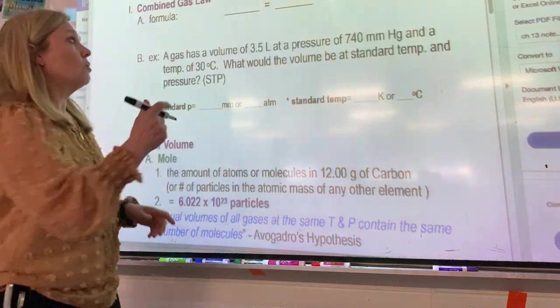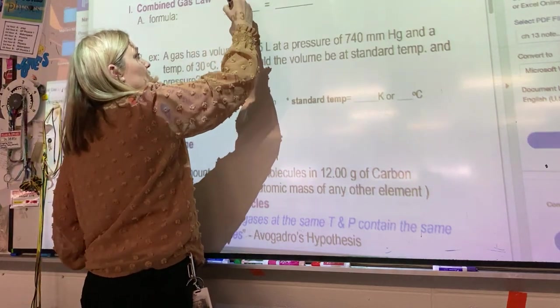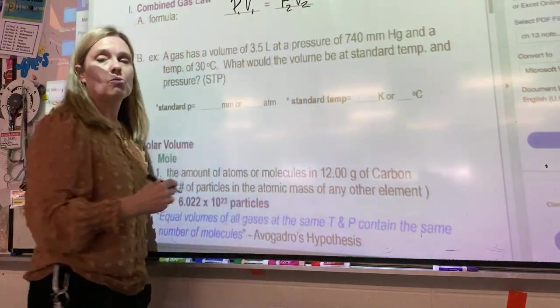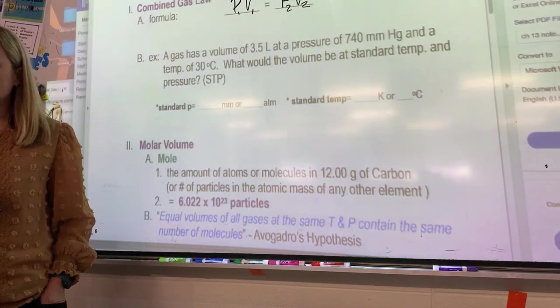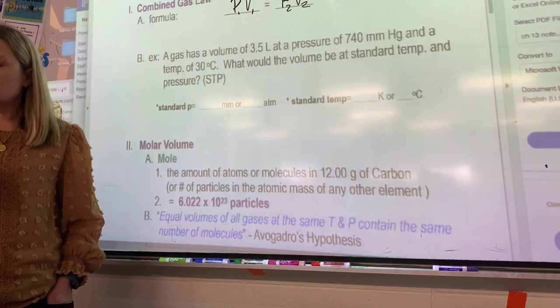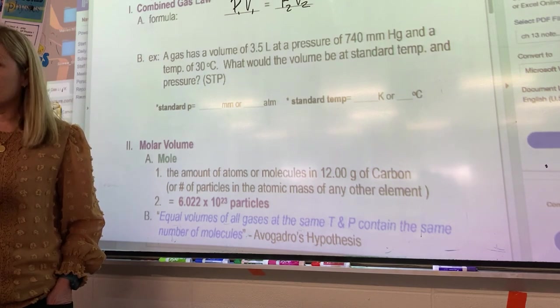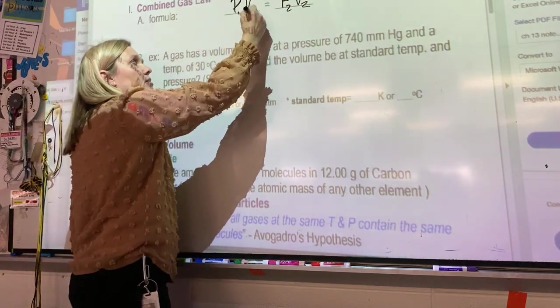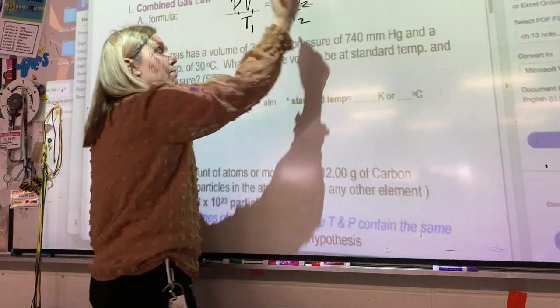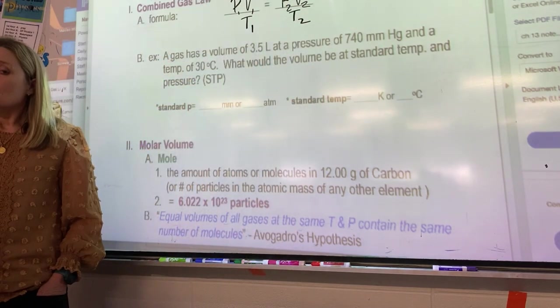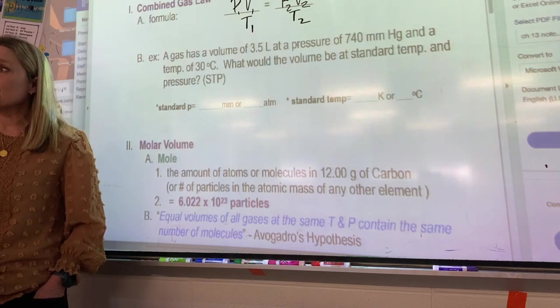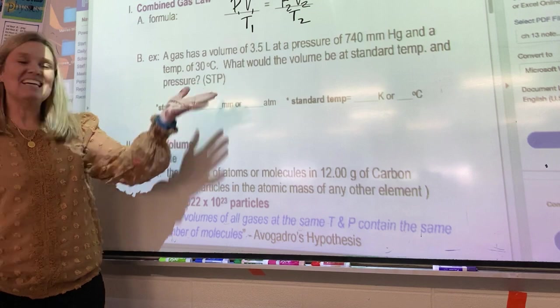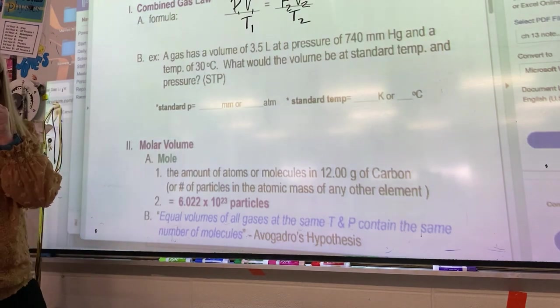So Boyle's was P1V1 equals P2V2. How do I add Charles to it? I need to add temperature, divided by T. Because that one was V over T. This is really hard to understand, but this is called the combined gas law because we combined them.